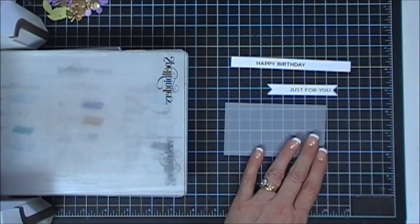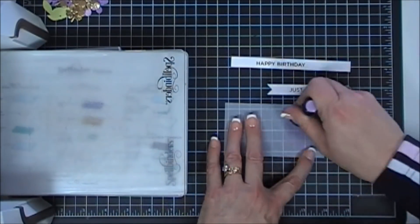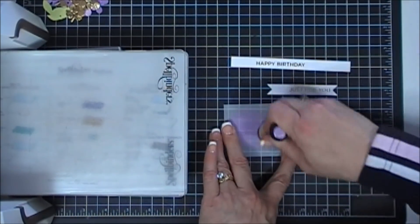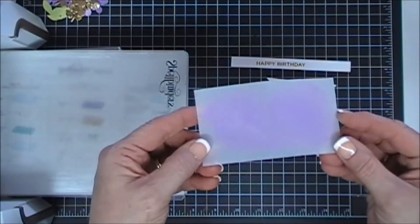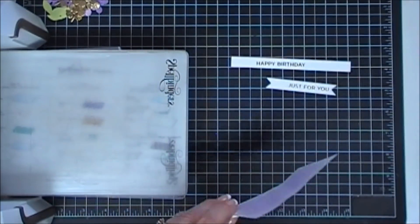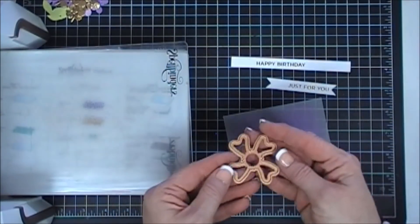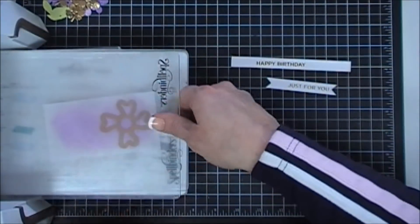Okay, while we have our die cut machine still here, I'm going to take a piece of vellum and just lightly go over it with my Dusty Concord blending tool. Then I'm using the same Stylized Flowers. I'm going to take one of the largest flowers in the set and die cut out two flowers.